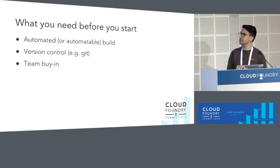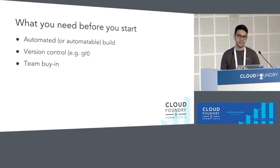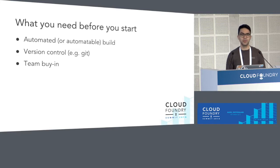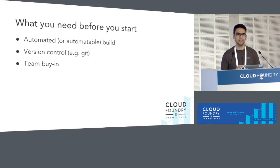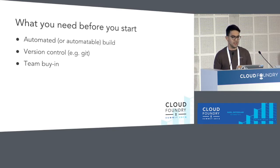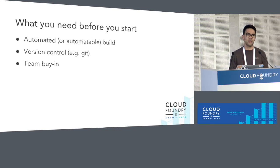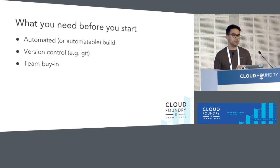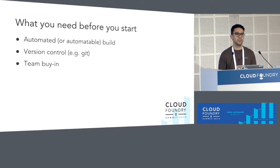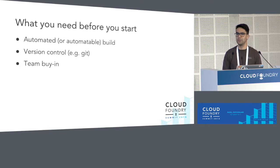What you need before you start doing CI and CD in your organization: you need an automated, or at least automatable, build — you need to be able to run your builds from the command line, compile your binaries, and deploy your software. You also need version control, especially if you plan to use Concourse. And more importantly, you need your team to buy in. CI and CD are tools for delivering software; if your team doesn't want to do it, there's no point in trying.